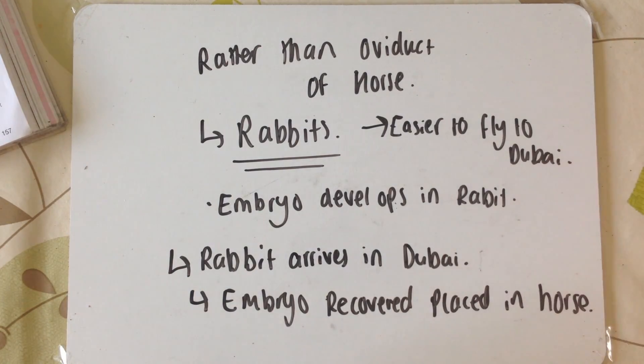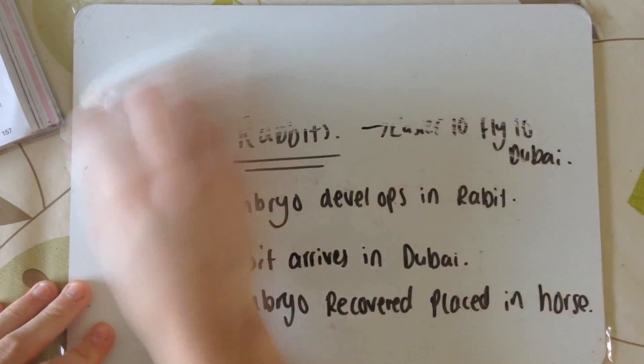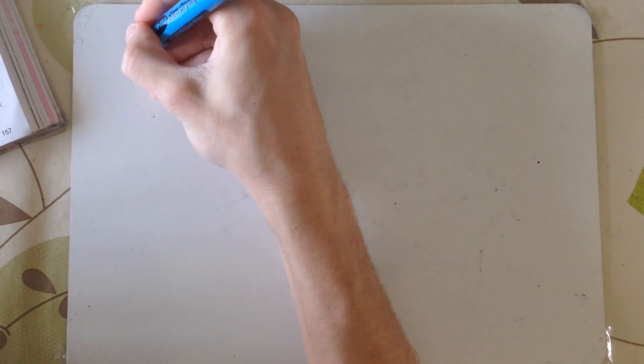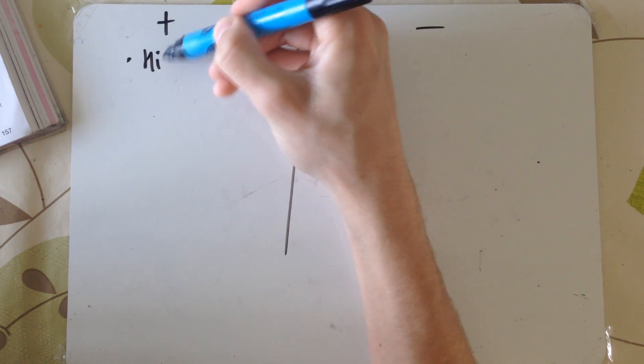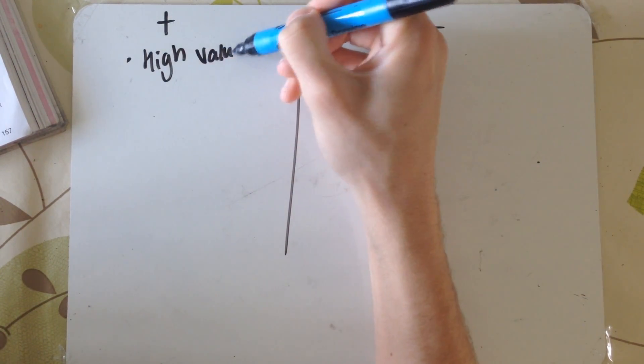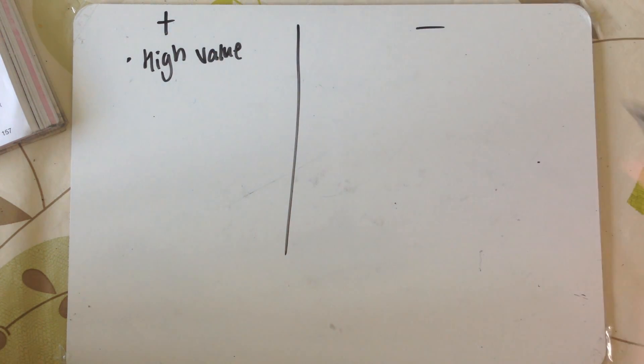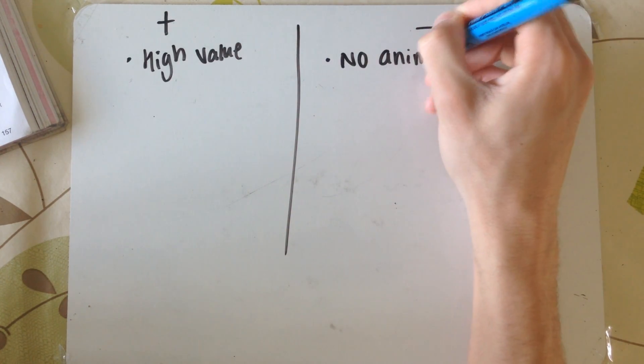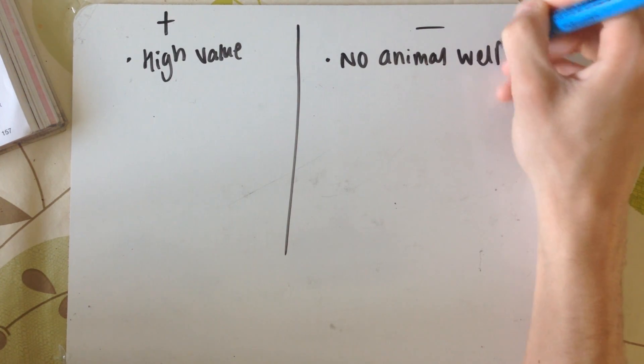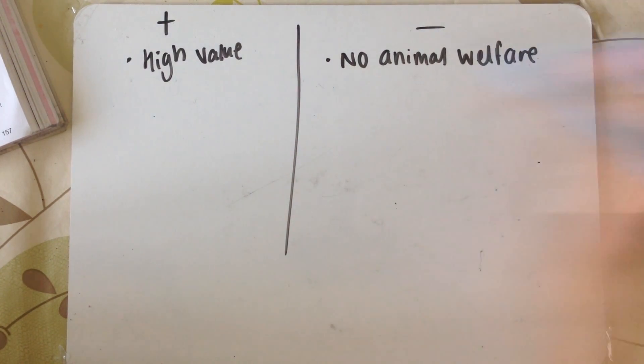I'm going to quickly give some advantages and disadvantages of cloning animals. The first advantage is high value animals. These produce the best products, so you'd want to clone them to produce more. The downside is people get greedy and only care about money, with no animal welfare in mind. For example, some chickens have been developed unable to walk. Sure they produce good flavored chicken, but they can't walk, so it's unfair on the animals.